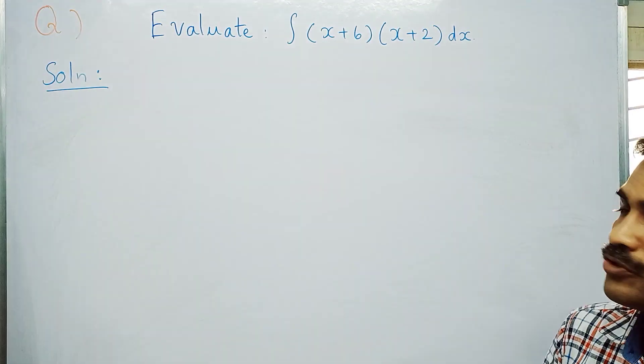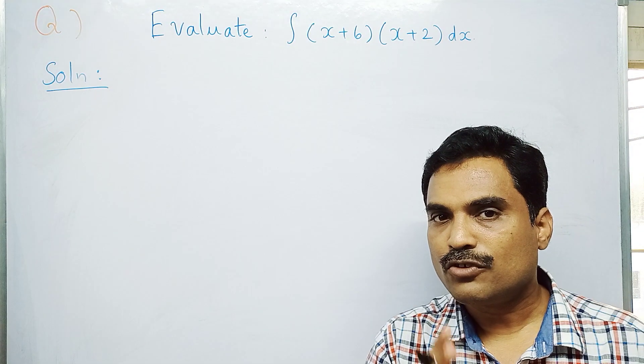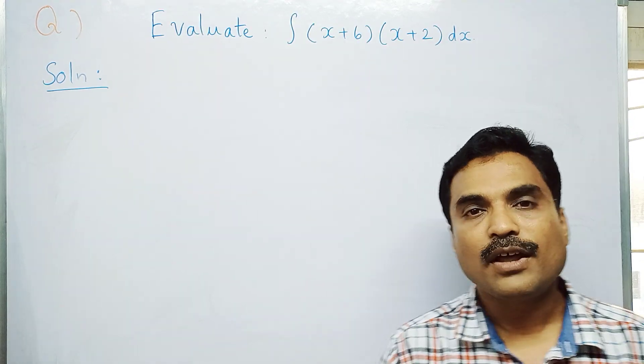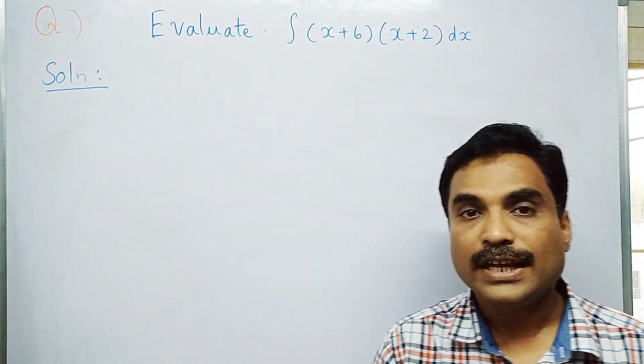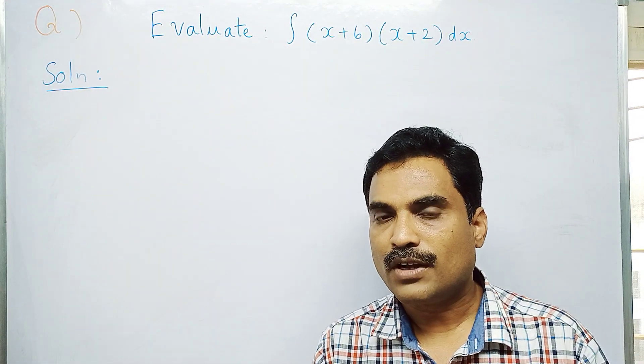To solve this problem, first multiply the integrand, then use two formulas: integral x^n dx is x^(n+1)/(n+1), and integral 1 dx is x.